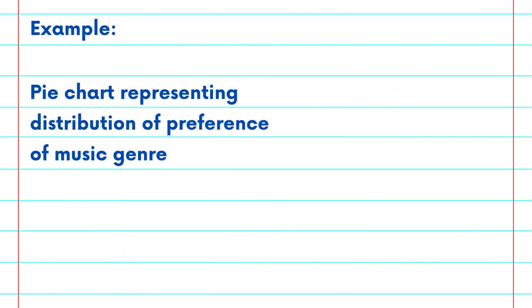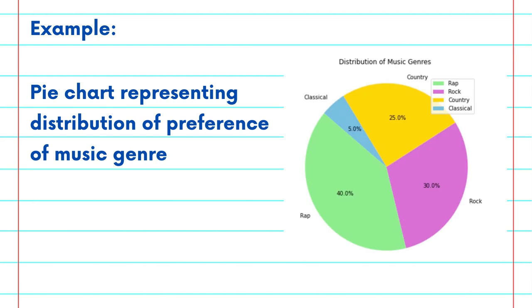An example of a pie chart presenting distribution of preference of music genre in a group is shown here.